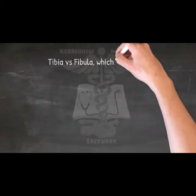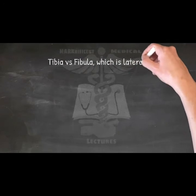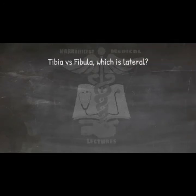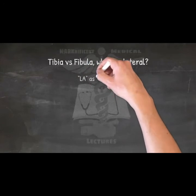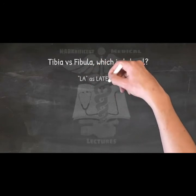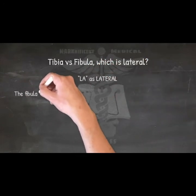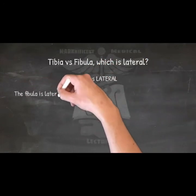Tibia versus fibula — which is lateral? If you can only remember one, remember the fibula. Fibula is spelled F-I-B-U-L-A. Take 'L-A' as lateral — the fibula is lateral.